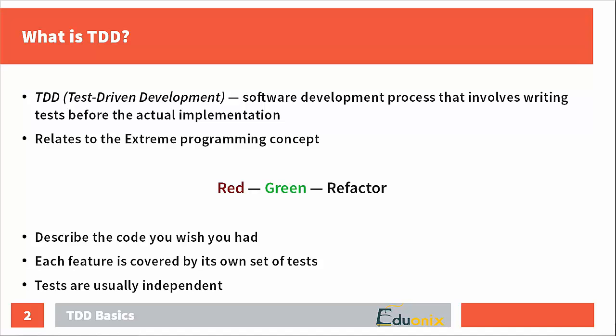This concept relates to the Extreme Programming concept — you may read about it on Wikipedia. Many developers call this cycle 'Red, Green, and Refactor.' The Red step means that when you first write your tests, they are going to fail because the actual implementation is not yet coded. A failing test is usually shown in red, so that's the red cycle.